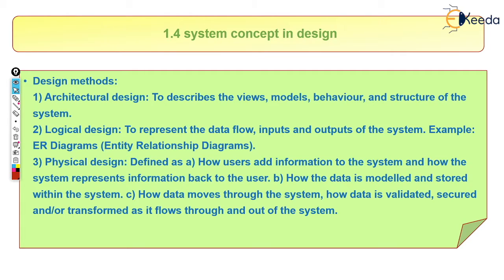Once you set it, it stores the data of how many kilometers you have traveled. Similarly, in a two-wheeler there is a distance or kilometer indicator showing how much distance you have covered. The third point is how data moves through the system and how data is validated, secured, and transformed as it flows through the system. This includes checking whether the distance indicator is working correctly and storing data properly — that is data validation.